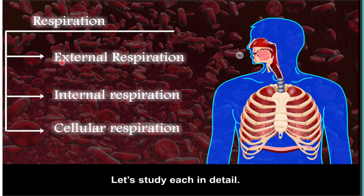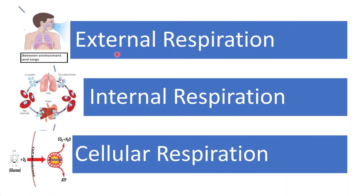Respiration takes place through three steps. The three steps in respiration are external respiration, internal respiration, and cellular respiration. In external respiration, exchange of gases takes place between the environment and lungs. Cellular respiration takes place in the cells where energy is released — that is, energy production takes place in the mitochondria, the organelle of the cell.